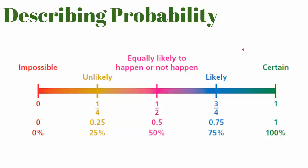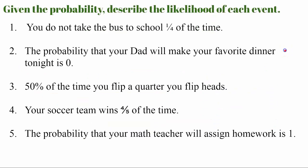Describing probability. There are different words we can use to describe probable outcomes. We say something is impossible if there's a zero percent chance of it happening. A one in four chance is unlikely. One out of two is equally likely to happen or not happen. Three out of four is likely. And one hundred percent is certain. You're going to use these five words to complete the next set of tasks. Go ahead and pause the video if you have not completed these yet, and come back and hit play when you're ready.